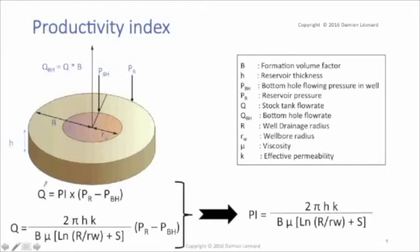We have two following formulas. The first: stock tank flow rate equals the productivity index times the pressure difference between the reservoir pressure and the wellbore bottom-hole flowing pressure.